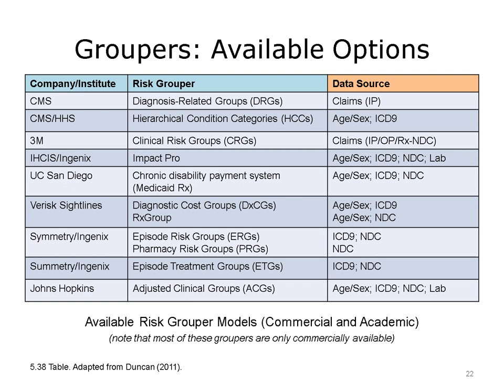There is a long list of groupers, both commercial and academic. The groupers can reduce the dimensions of population health data by reducing the number of low-level concepts used for predictive modeling. This table lists a number of so-called risk groupers. Note that not all groupers use all available data sources for grouping and predictive modeling. For example, the diagnosis-related groups (DRGs) only use diagnoses data and are customized for inpatient settings. But the adjusted clinical groups (ACGs) use a variety of data types, including demographics, diagnoses, medications, and even lab results.